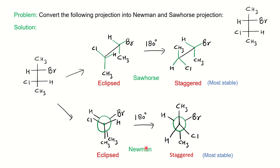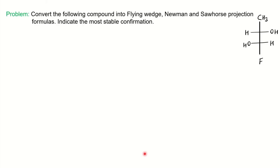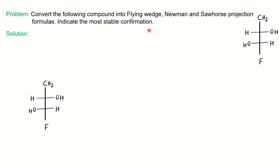This conformation is called the Newman projection formula. So this is how you convert your Fisher projection formula into sawhorse and Newman. To understand further, we will see one more problem from a previous year question paper. The Fisher structure is given and they ask you to write down the flying wedge, Newman, and sawhorse projections, and also to identify which is the most stable conformation.